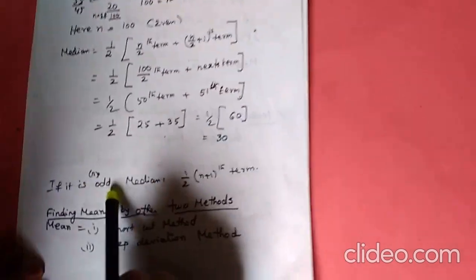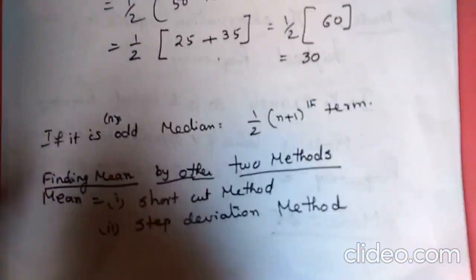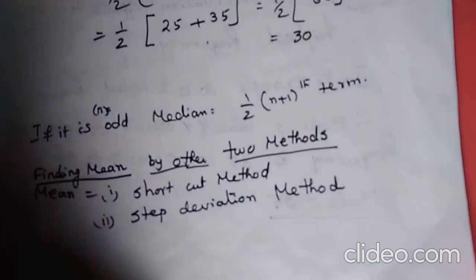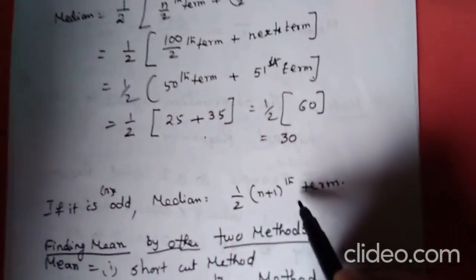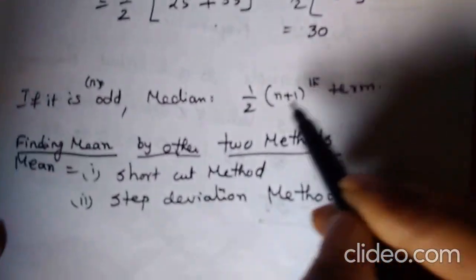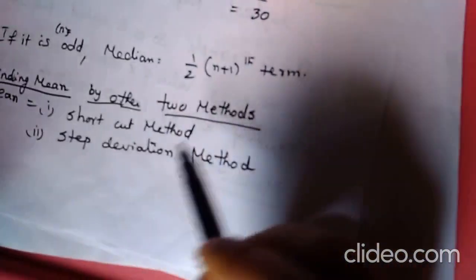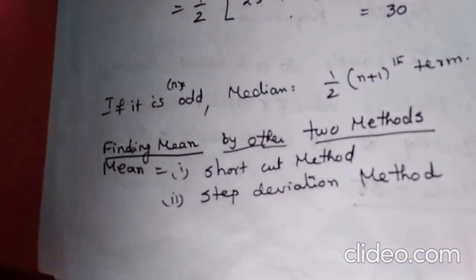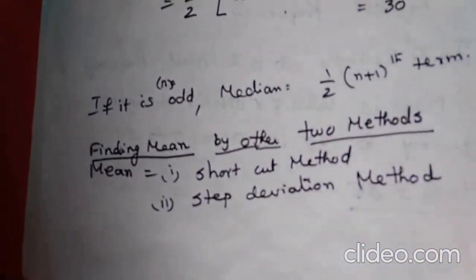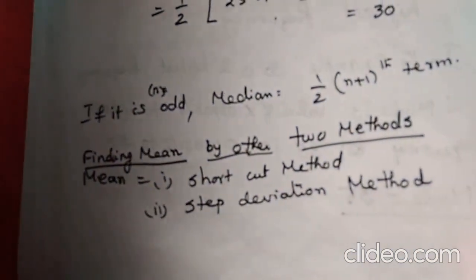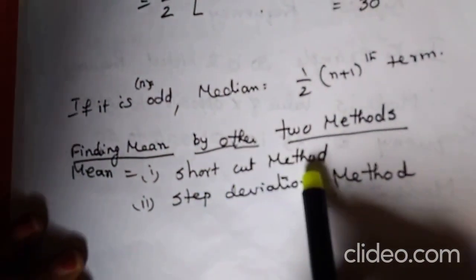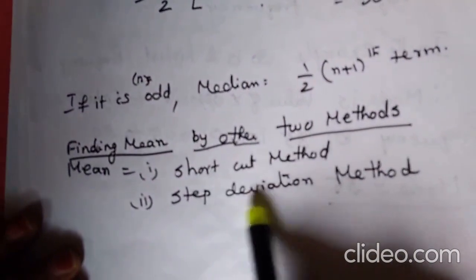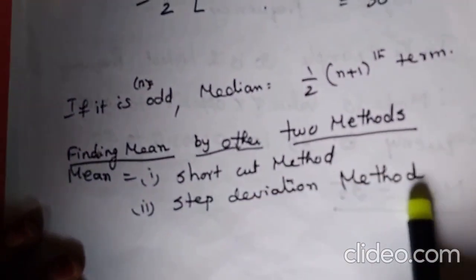If it is odd, then median is equal to the (n+1)/2 th term. Now you have to remember finding the mean by the other two methods. There are two more methods to find the mean: one is the shortcut method, and the second is the step deviation method. That first one is called the direct method.